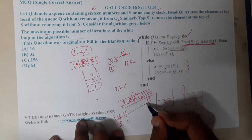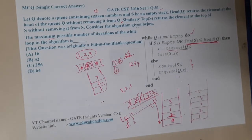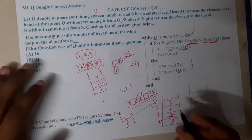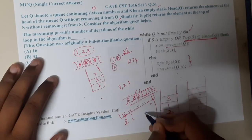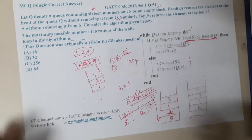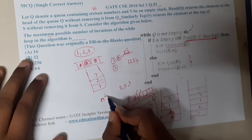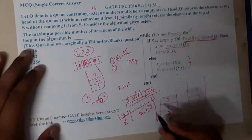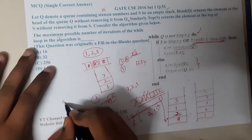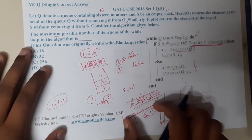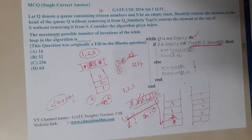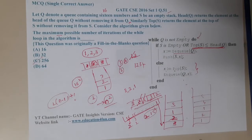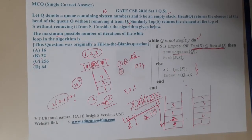This behavior is familiar — for each element, it takes approximately two times (n−1) operations, plus one. So the total number of iterations is on the order of n squared. For n = 16, that gives 16² = 256, which is our answer.